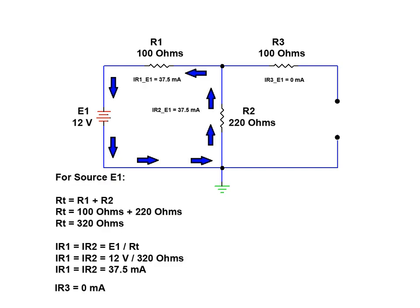Ohm's law can now be used to calculate the individual resistor currents. Note that the current for R3 is zero milliamps for this source due to the removal of the I2 current source and the remaining open circuit in that branch of the network.